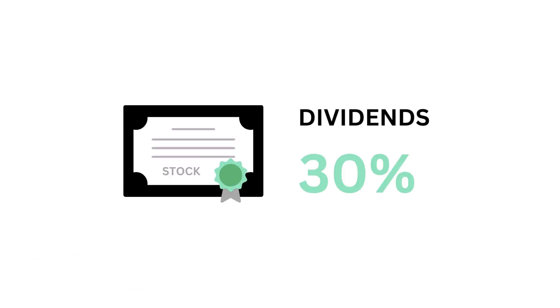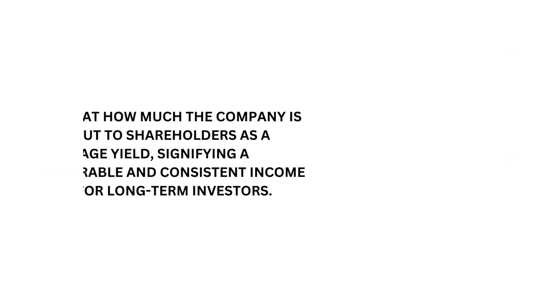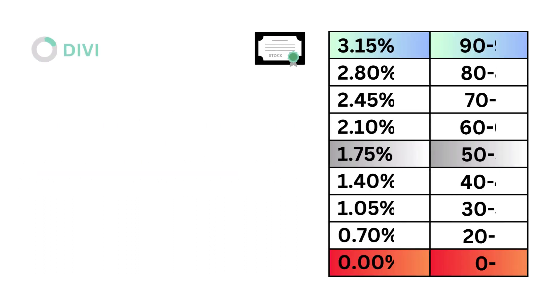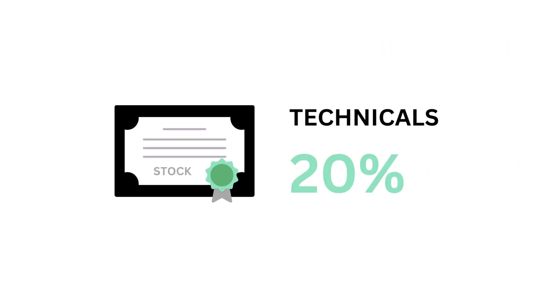Next, dividends, which accounts for 30% of the stock factor. Dividends looks at how much the company is paying out to shareholders as a percentage yield, signifying a considerate and consistent income source for long-term investors. The models tell us that a dividend yield of 1.75% is considered average. Here's our dividend yield and dividends grade.